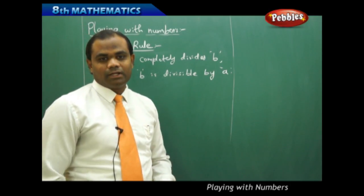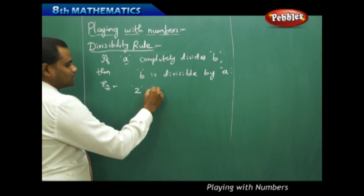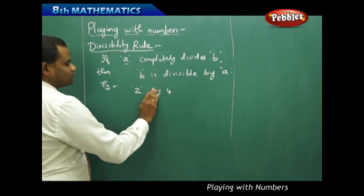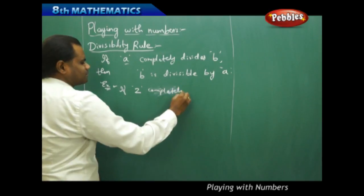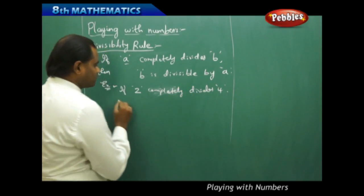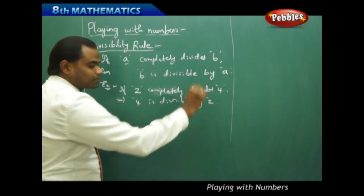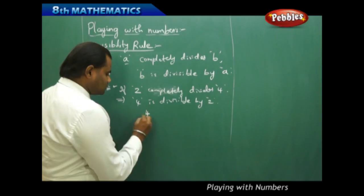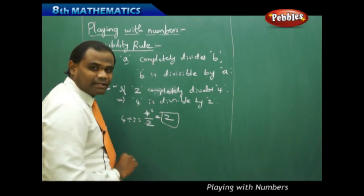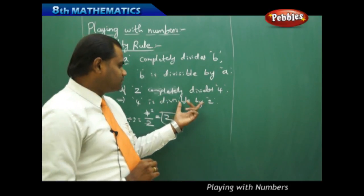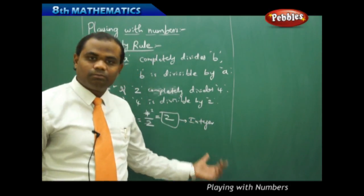This is the notation for the divisibility rule. For example, if 2 completely divides 4, that implies 4 is divisible by 2. We know that 4 divided by 2 gives an integer. When you perfectly divide a number with another number and it completely divides, we always get an integer. This is also part of the divisibility rule.